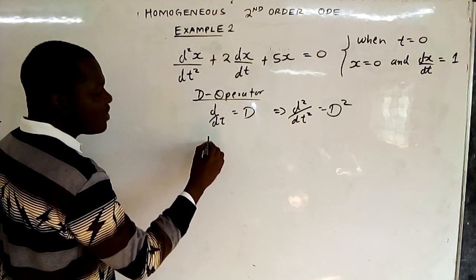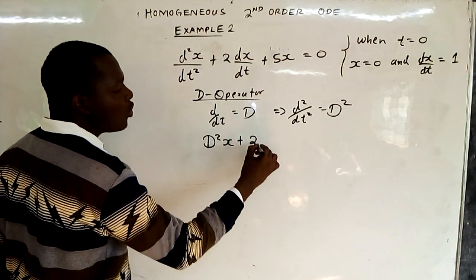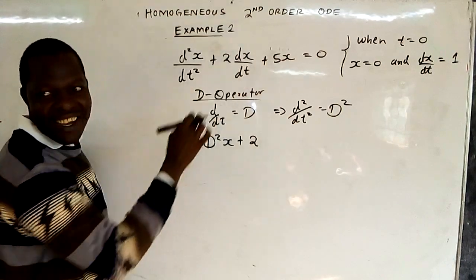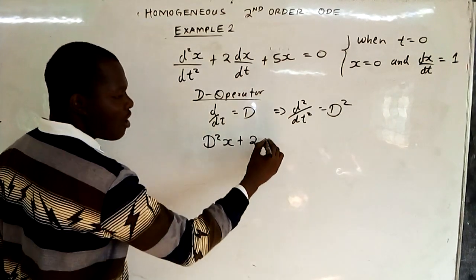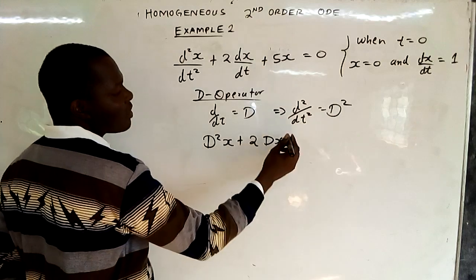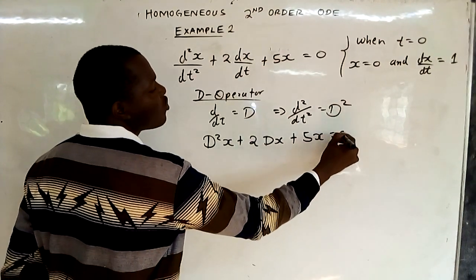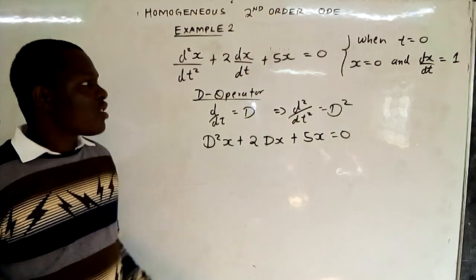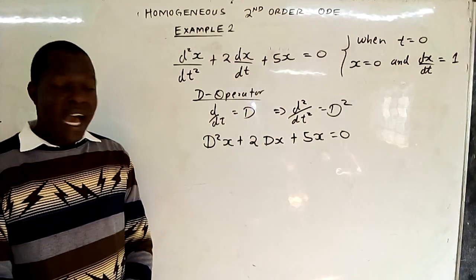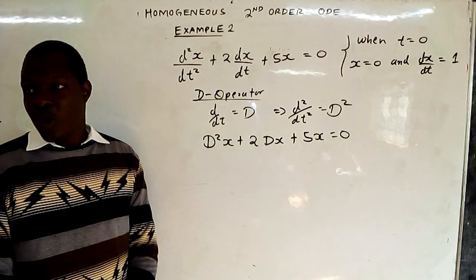So the first term is D squared of x, plus 2 times d/dt which is D, giving D of x, then plus 5x equals 0. There is no d/dt on the last term, so there is no D there. From there, we substitute D with m because we want to solve it.